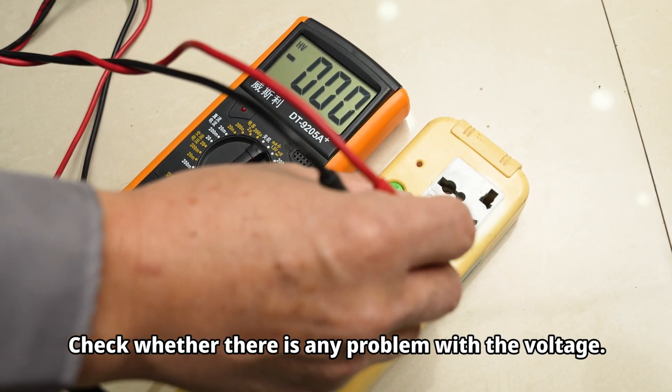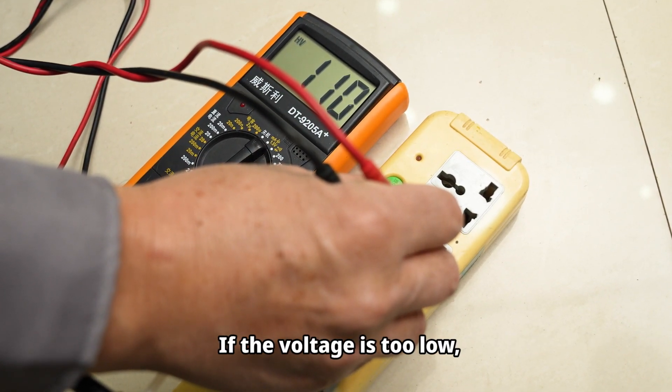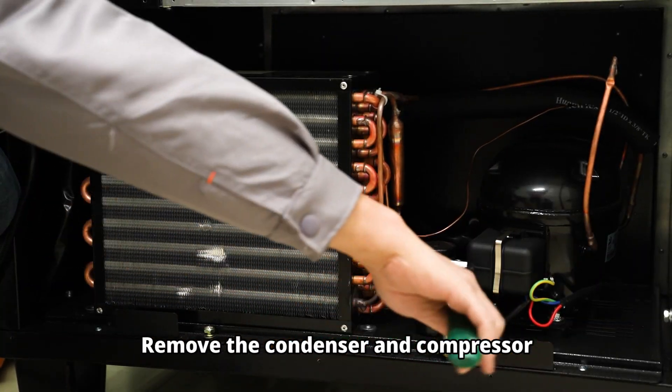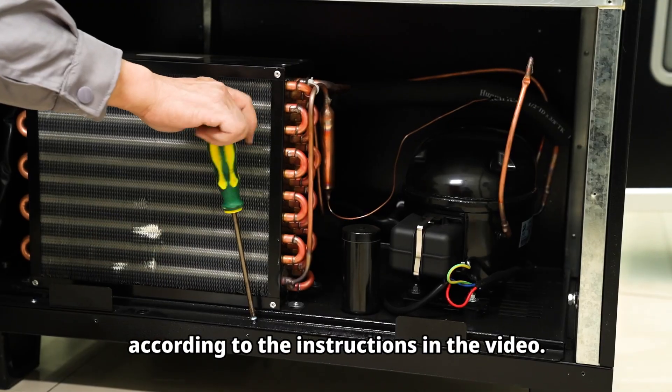Check whether there is any problem with the voltage. If the voltage is too low, it will affect the operation of the compressor. Remove the condenser and compressor according to the instructions in the video.